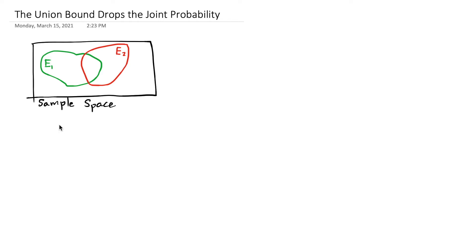Let's say you have two events, e1 and e2. They overlap, and I'm trying to find the probability of the union. That is, the probability that either e1 or e2 happens, or both.